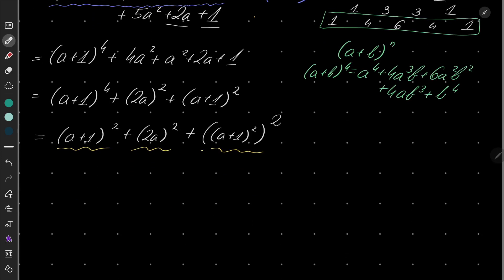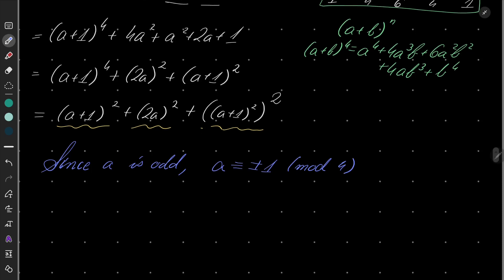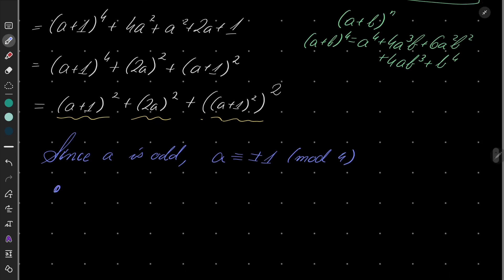And let's see. Since I will use modular arithmetic. Since a is odd, a must be either congruent to plus 1 or minus 1 modulo 4. It cannot be congruent to 0, because it would mean that our number is divisible by 4. It cannot be congruent to 2 because it would mean that our number is even. So, a is either congruent to 1 or minus 1. Let's consider these two cases.